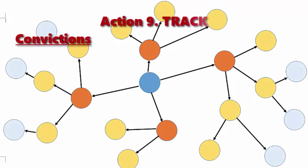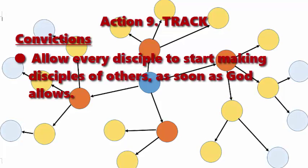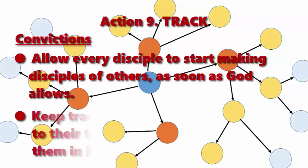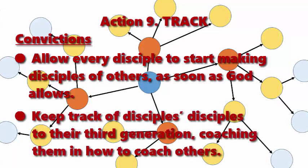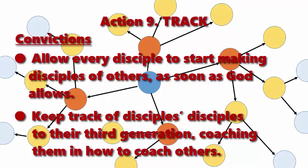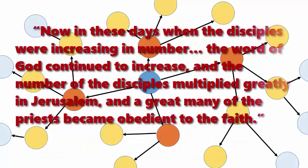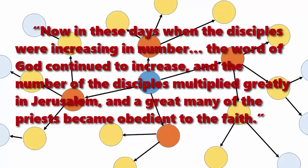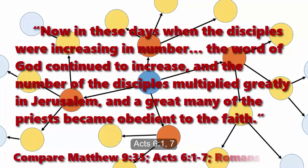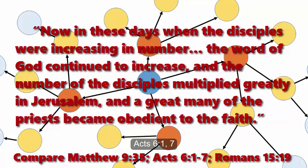Action 9 – Track. Allow every disciple to start making disciples of others as soon as God allows. Keep track of disciples' disciples to their third generation, coaching them in how to coach others. "Now in these days, when the disciples were increasing in number, the word of God continued to increase, and the number of the disciples multiplied greatly in Jerusalem, and a great many of the priests became obedient to the faith."